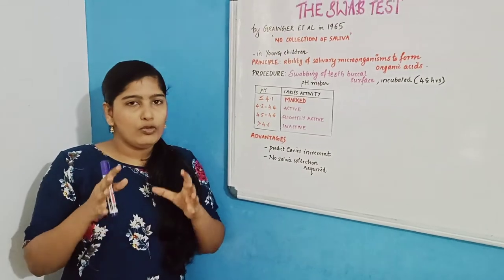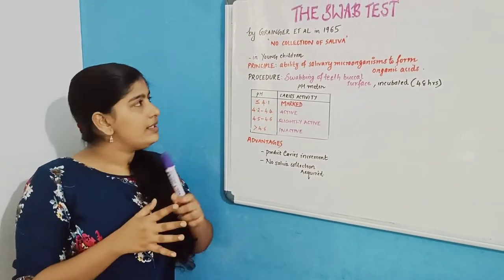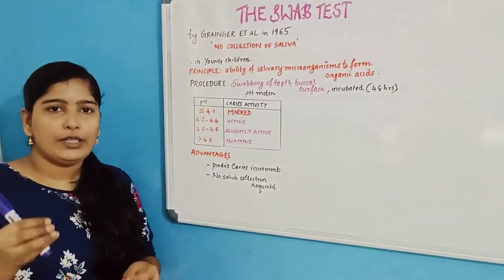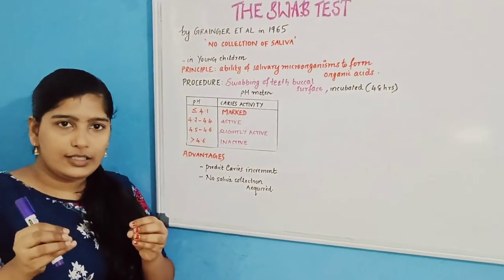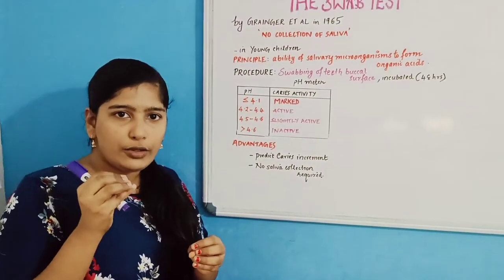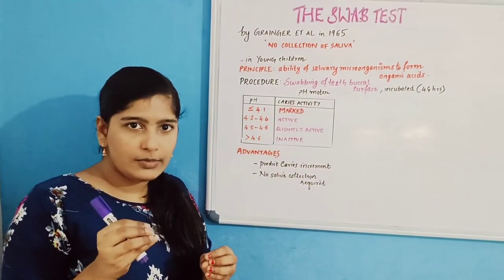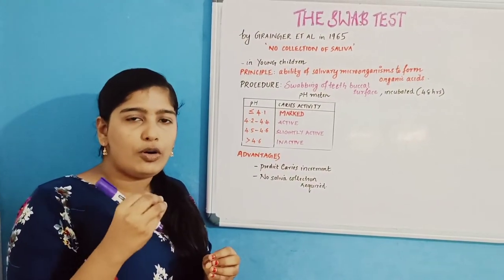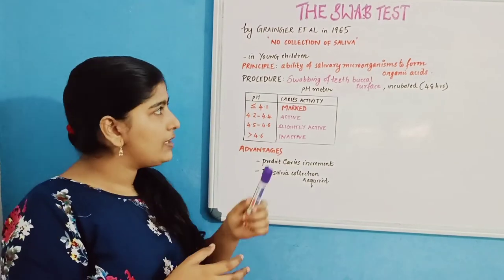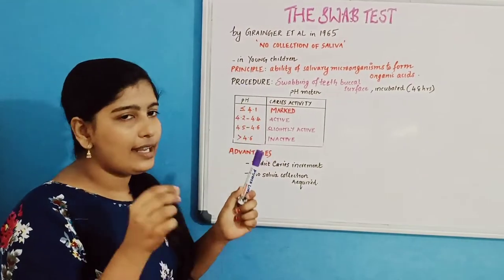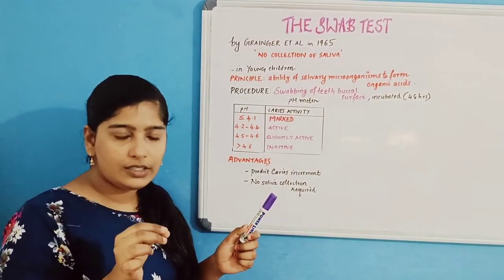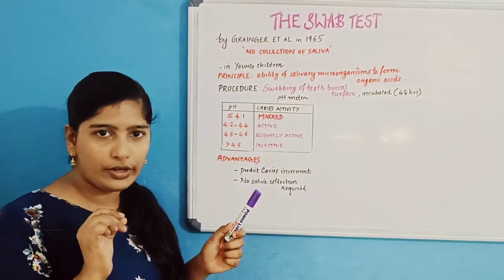Moving on to the principle of the test: the principle is to estimate the ability of salivary microorganisms to form organic acids. This principle is exactly the same as that of the Snyder test, which has been discussed before.